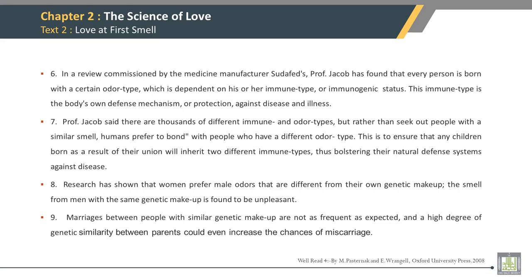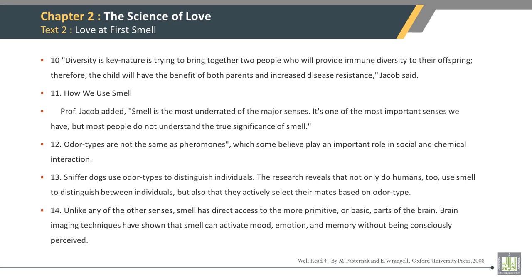First sentence of Paragraph 7: Professor Jacob said there are thousands of different immune and odor types, but rather than seek out people with a similar smell, humans prefer to bond with people who have a different odor type. Fourth sentence of Paragraph 8: Research has shown that women prefer male odors that are different from their own genetic makeup; the smell from men with the same genetic makeup is found to be unpleasant. Fourth sentence of Paragraph 9: Marriages between people with similar genetic makeup are not as frequent as expected, and a high degree of genetic similarity between parents could even increase the chances of miscarriage.